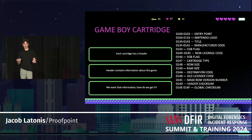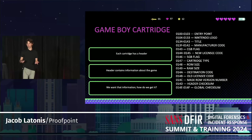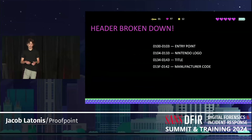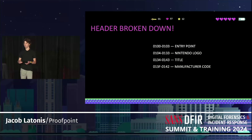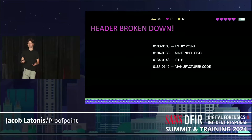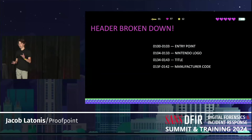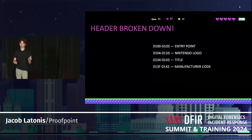As for the cartridge itself, there's some information we need to know before we start reverse engineering. Each cartridge has a header — much like a PE file or a Mach-O. The first thing is the entry point — the console automatically goes there and we start from there. There's also the Nintendo logo in byte form on the cartridge, which has to match exactly what the console expects. This was Nintendo's first version of DRM. If a pin was dirty and a bit was corrupted, the logo wouldn't load properly and the game wouldn't run.